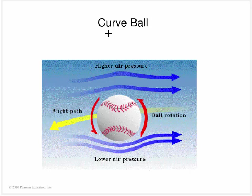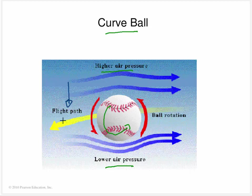For baseball fans, this also explains a curveball. The ball is rotating in one direction, generating high pressure on top and low pressure on the bottom because of the difference in velocities. The flight path of the ball curves in the downward direction.